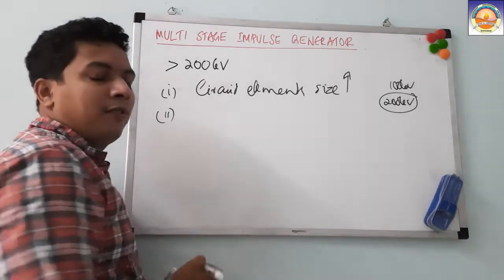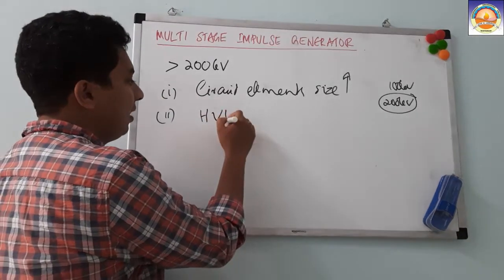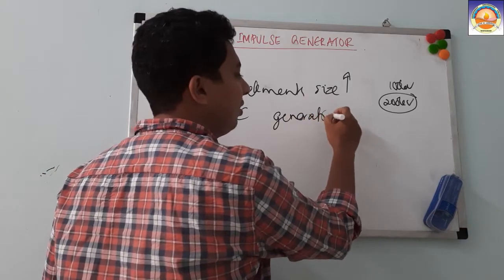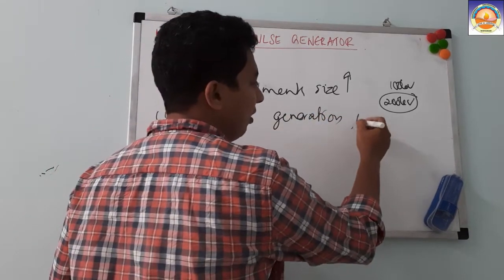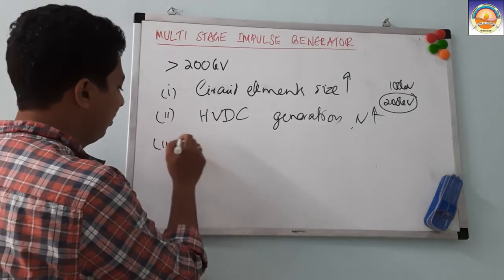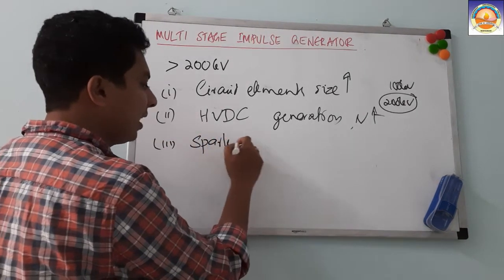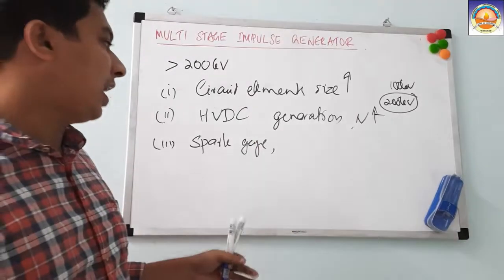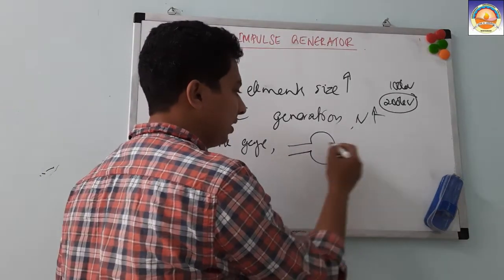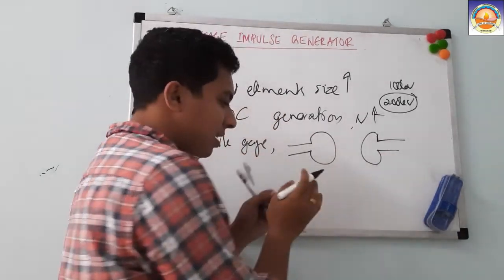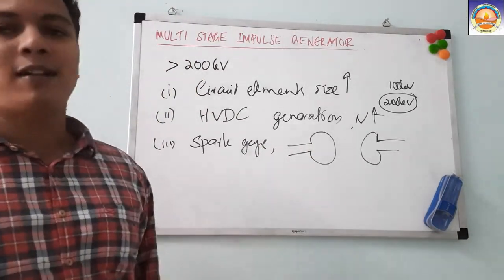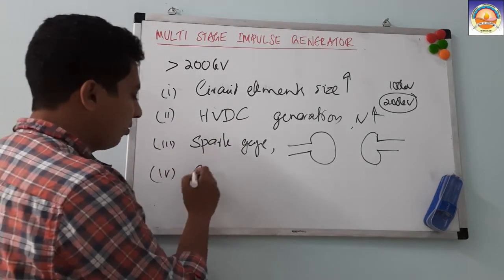Another problem is that we need high voltage DC, and it is hard to generate — high voltage DC generation itself becomes a problem as voltage increases. The third problem is spark gaps: for very high voltages like 1000 kV, the spark gap is not reliable. For 100 kV it is reliable, but at 1000 kV it will not be reliable.